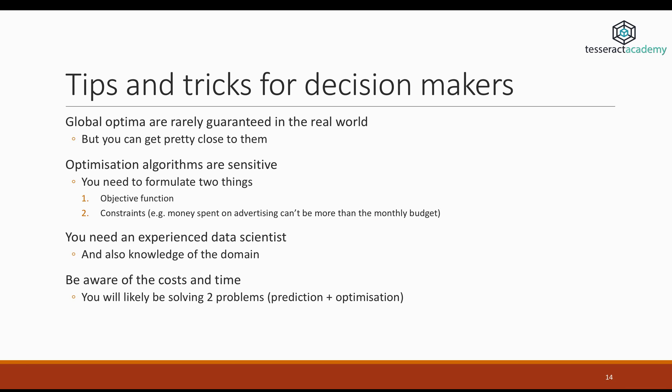Finally, some things to be aware of before you actually move forward with your optimization projects. The first thing to be aware of is that global optima in the real world are rarely guaranteed. So what I mean by this, there are many possible solutions to an optimization problem. Most of these solutions will be what we call local optima. This means there are solutions that are good enough, but they're not the best. So finding a global optimum is basically the holy grail of optimization. But for some optimization problems, you can find it. For some others, there's no guarantee you're going to find it irrespective of what method you are going to use.